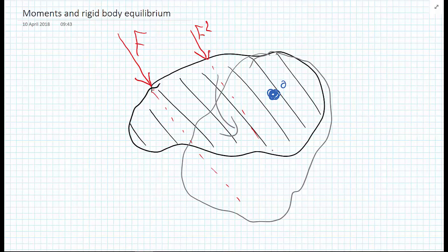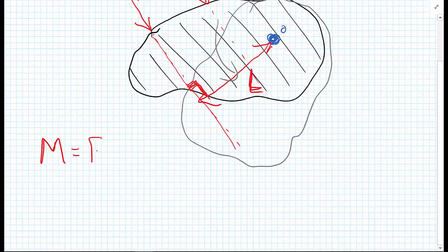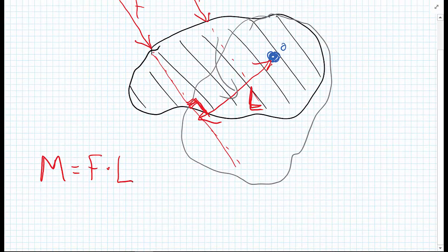The measure of the moment is actually the force multiplied by the perpendicular distance. This angle here needs to be a right angle. We'll call this perpendicular distance L for now. So the moment M equals the force multiplied by the perpendicular distance L.